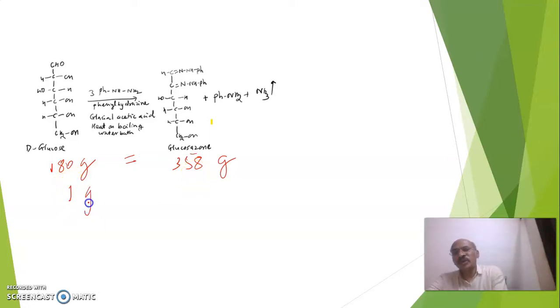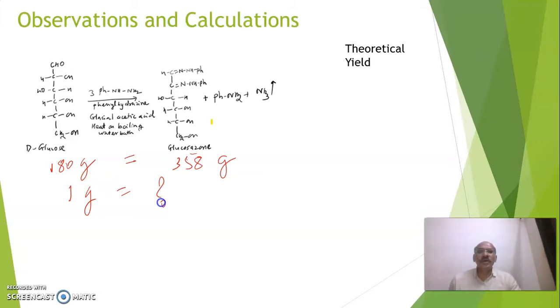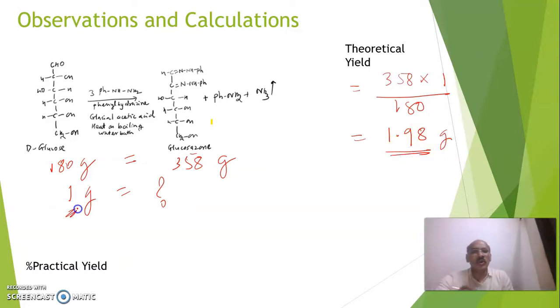Therefore, suppose if we have started with 1 gram, that corresponds to how much by assuming 100% conversion, and that will be our theoretical yield. And that here we have to do as 358 multiplied by 1 divided by 180 gram - means molecular weight of product multiplied by weight of starting compound taken divided by molecular weight of starting compound. And it will come around 1.98 gram, approximately double of this 1 gram. Now this is about theoretical yield.